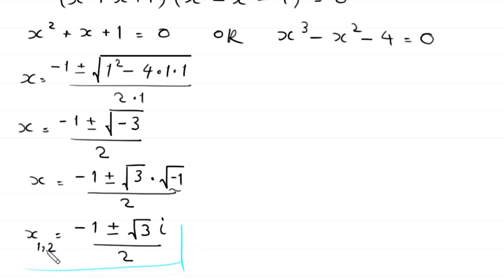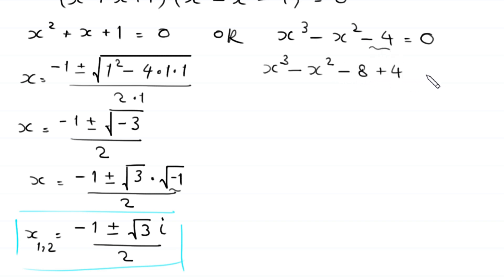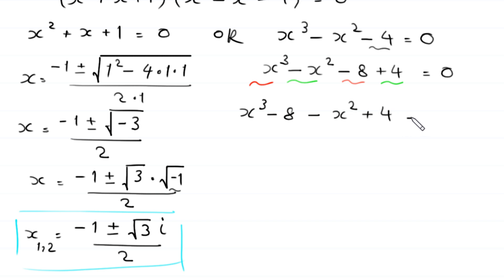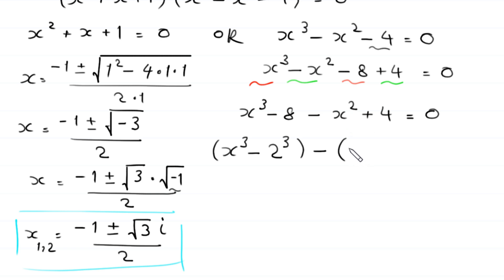Now for the cubic equation x³ - x² - 4 = 0, we rewrite -4 as -8 + 4 to form two groups: (x³ - 8) - (x² - 4) = 0. We note that 8 = 2³ and 4 = 2².